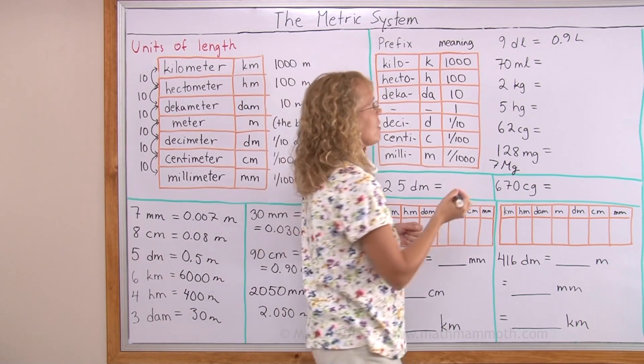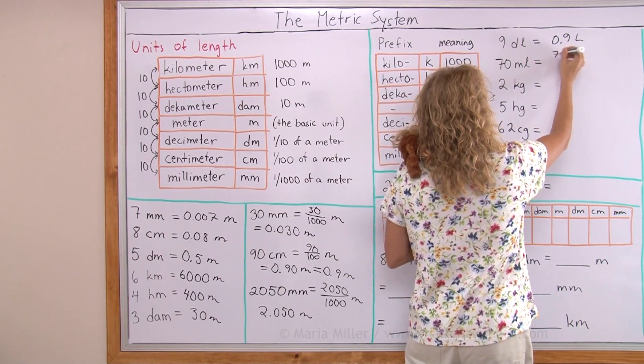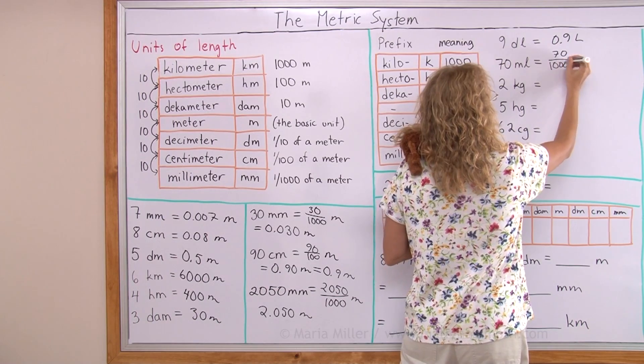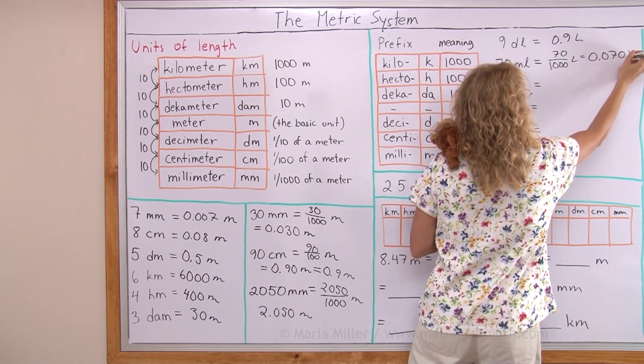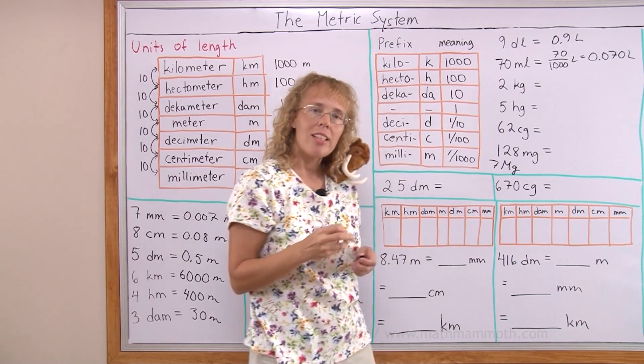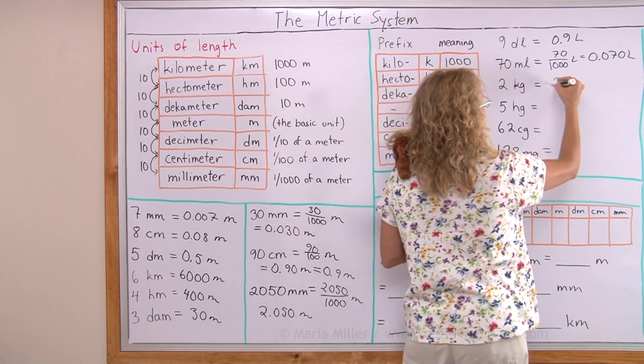Seventy milliliters. Milli is thousandth. So I have seventy thousandths of a liter. As a decimal, 0.070 liters. Two kilograms. Kilo is thousand. So I have two thousand grams.